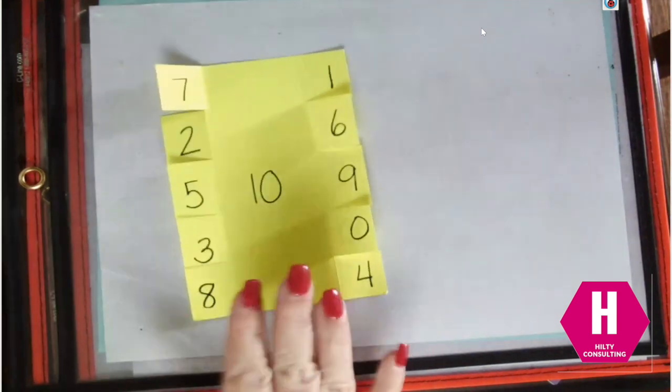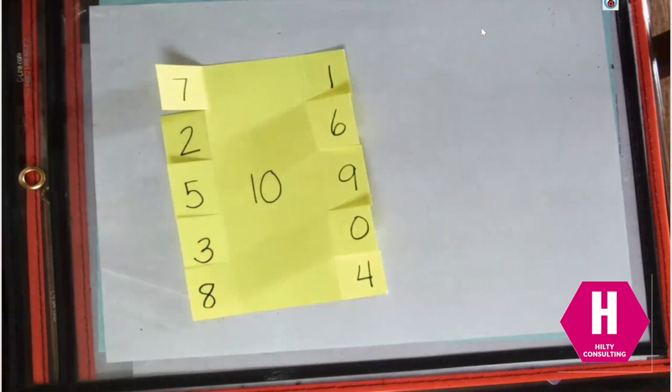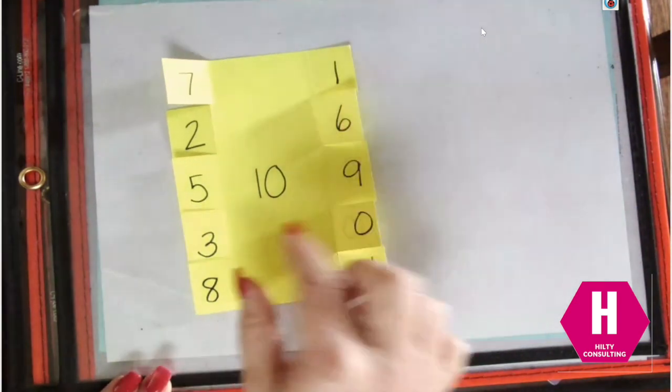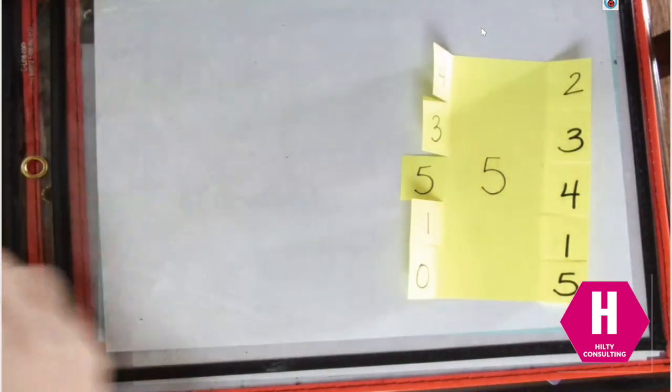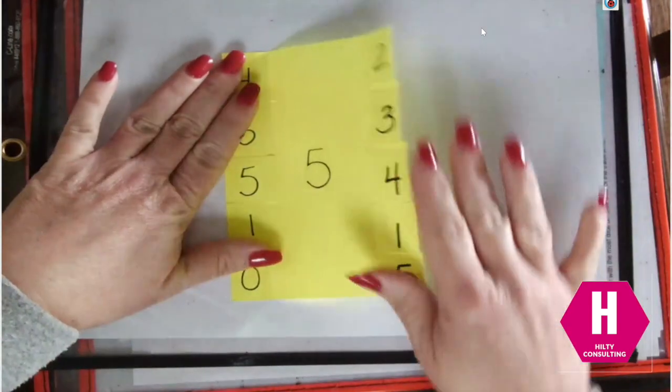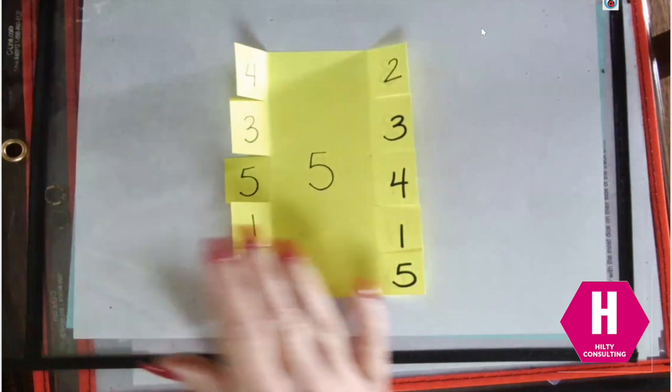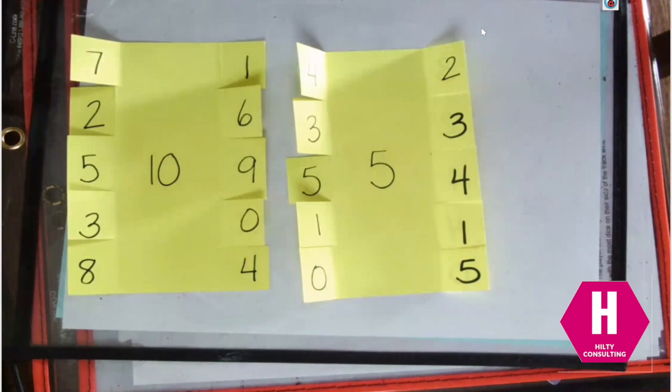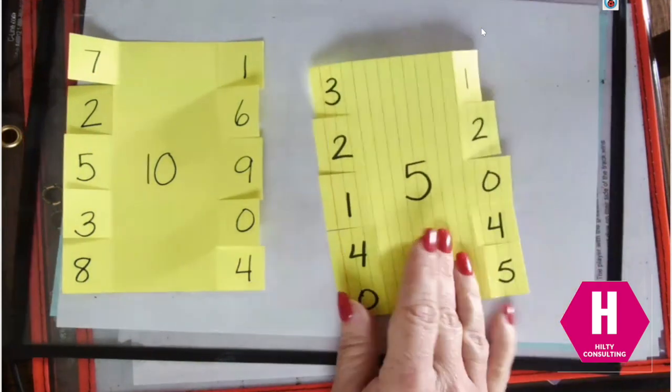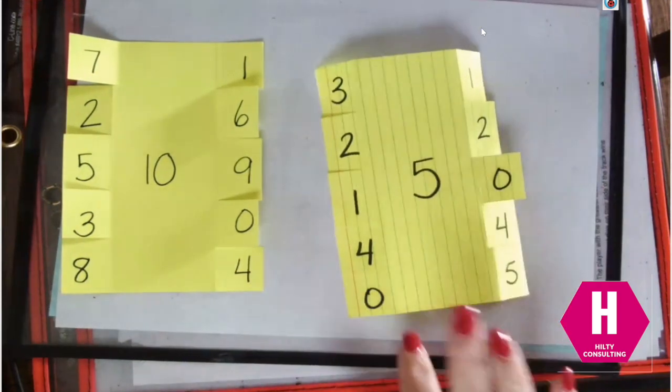So for our younger learners, we don't have the operation. We're not working on that addition, subtraction. We're working on that part, part, whole combination. If this is my whole, what are my two parts to make that whole? You can see here with this one, if my whole is 5, because I don't have as many partners as I did with 10 to make 5, we repeat some of those over again so that we get that extra practice and we can still fill all the tabs in. Same thing is true. And you can see what that looks like on the back of our 5 as well.